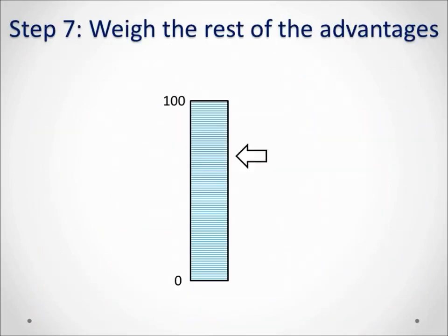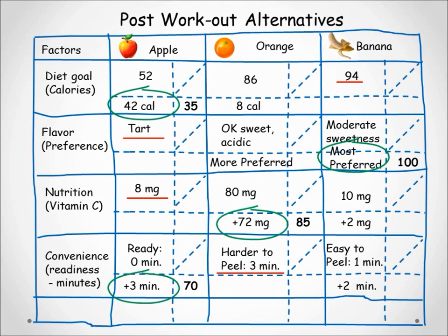Next we decide the importance of the remaining advantages — the ones that have not been underlined or circled. We continue to ask: which is more important — the advantage of the more preferred taste of the orange, or 72 milligrams of vitamin C of the orange? The advantage of two minutes saved peeling the banana, or eight fewer calories of the orange? We keep asking these comparative questions until we have scored every advantage.